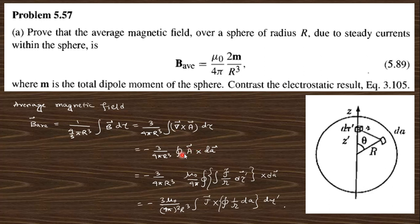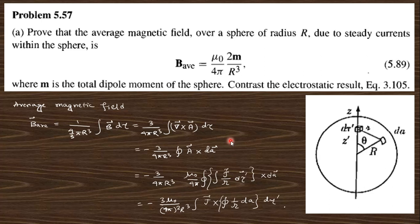This follows from a vector identity or a different form of Stokes' theorem. You can refer to the book Vector Analysis by Spiegel, or check my videos on that. Using this, the value of A is (μ₀/4π) times the integral of J/r dτ, so just rearranging gives this form.